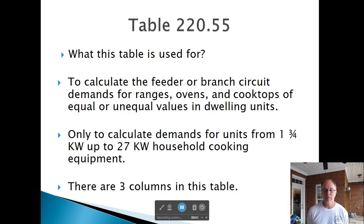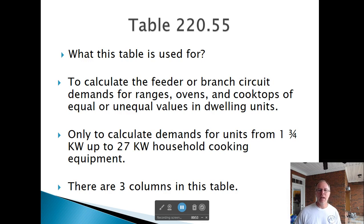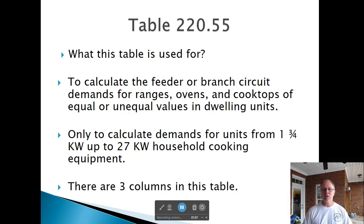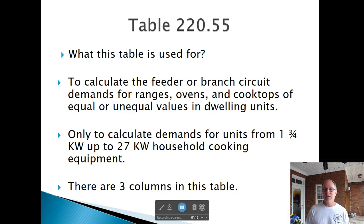This is household cooking equipment. We've got three columns to deal with today. Mostly we're going to do Column C. You will probably never use this on the job, but to pass the test you're going to need this. It helps you understand what's going on — basically you're not using everything on a cooktop or range at once. You're only using one eye on the cooktop or three eyes and the oven, so we're able to derate it.